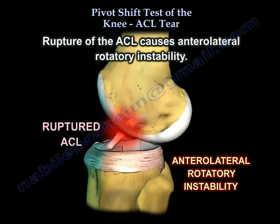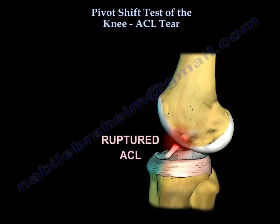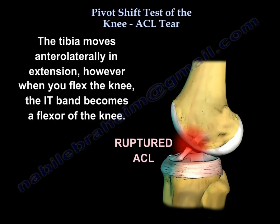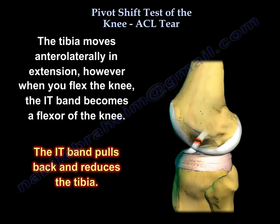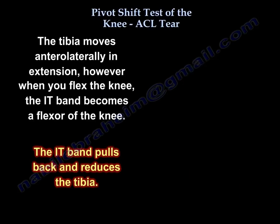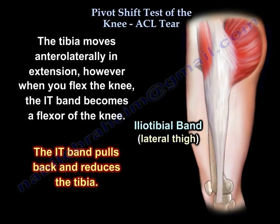You can see here that the ACL is ruptured and you can see the anterolateral rotatory instability. The tibia moves anterolaterally in extension. However, when you flex the knee, the IT band becomes a flexor of the knee. The IT band pulls back and reduces the tibia. The IT band is located on the lateral aspect of the thigh and the knee.